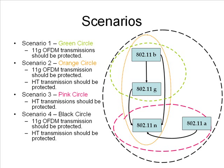The last and final scenario is scenario four, represented by the black circle. This type of network is also practically possible and persists even in new deployments. In this case, both 11g, 11a, and HT transmissions should be protected. 11g should be protected since 11b cannot decrypt 11g transmissions, and similarly HT transmissions should be protected since all legacy protocol devices cannot understand or decrypt HT transmissions.